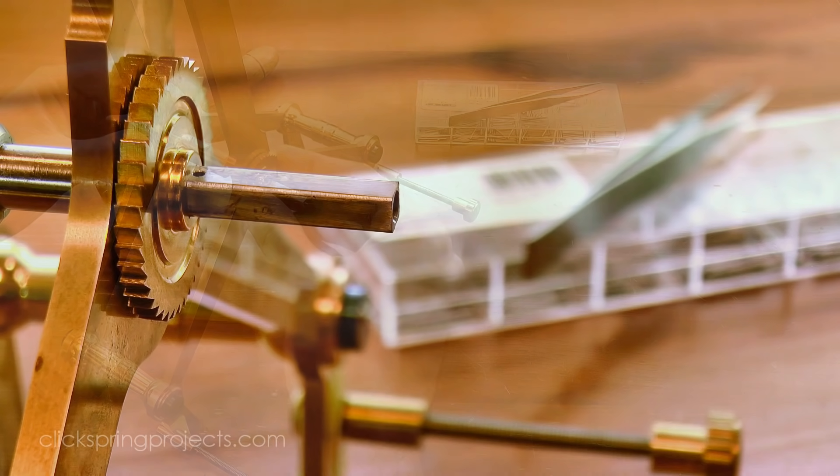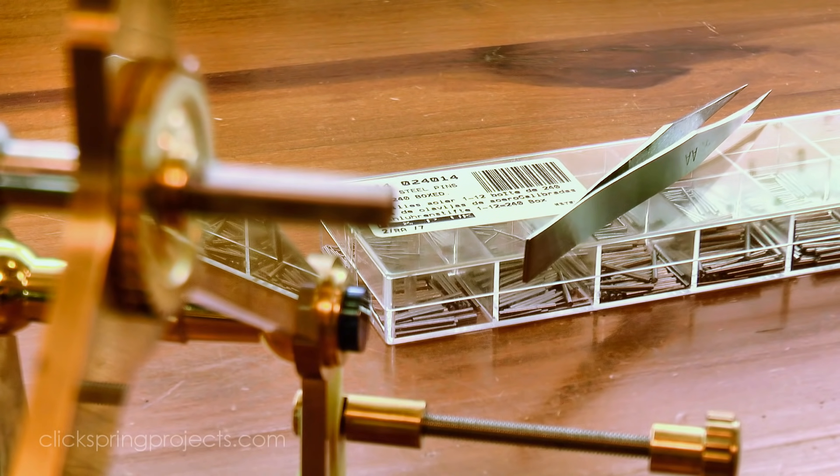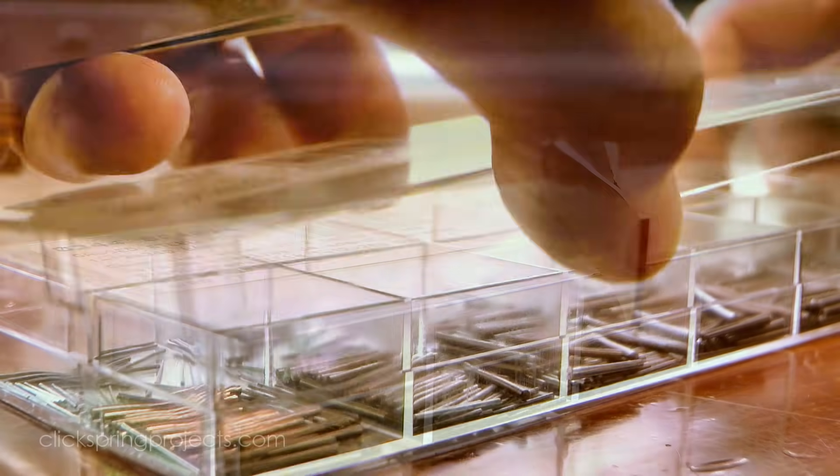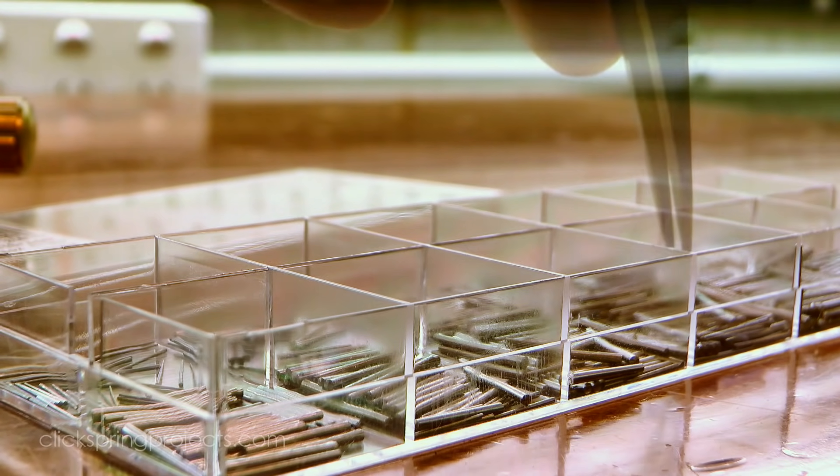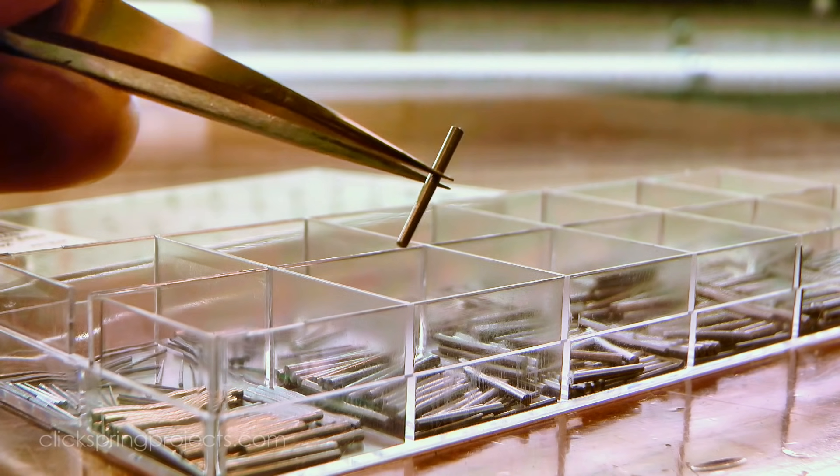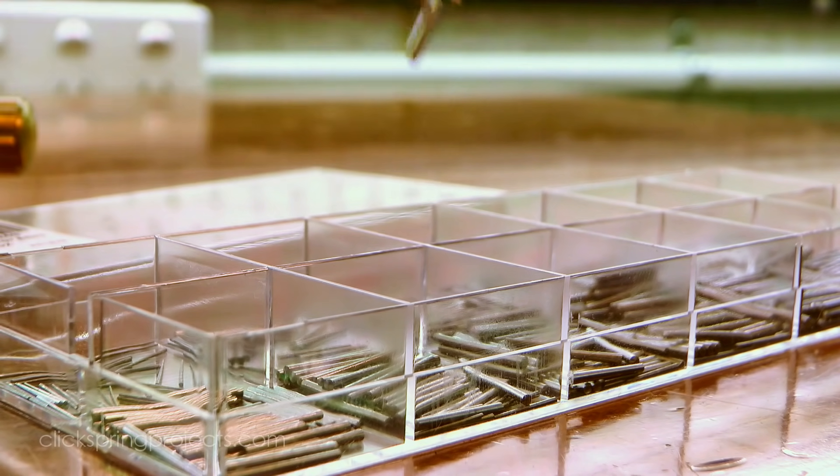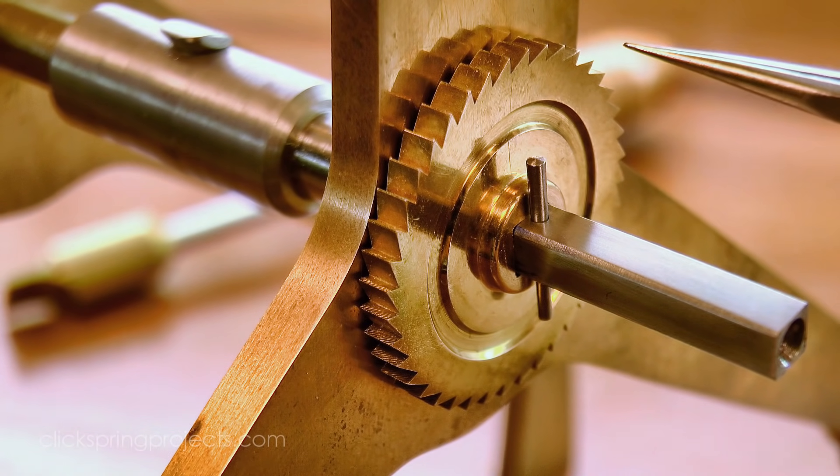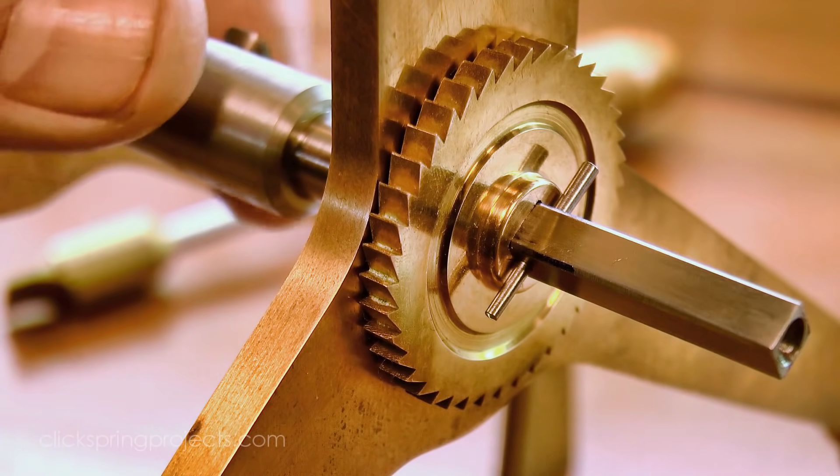In classic clock making, tapered clock pins are a common method of fixing components into position. The pins are about a half inch long and have a gentle taper that locks them in place after insertion. The appropriately sized pin is selected and then gently driven into the hole. Although in this case, I'm putting it in very gently because I have to disassemble the mechanism many times before I'm finished.